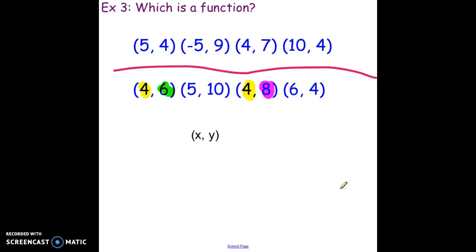When I put in 4 the first time I get 6, when I put in 4 the second time I get 8. I don't get the same output, so it's not functioning correctly. It's okay that in this first one I have two outputs of 4 - that's like having two rows of Reese's peanut butter cups. The top one is the function.